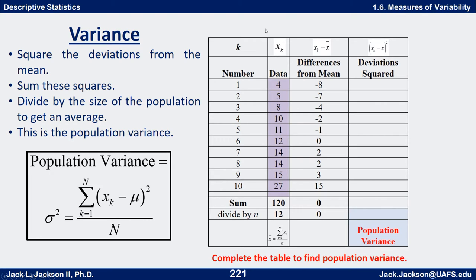Let's return to the dataset from the mean absolute deviation video. The data set in purple is: 4, 5, 8, 10, 11, 12, 14, 14, 15, and 27, listed in increasing order. There are 10 values and their sum is 120, so the mean is 12. We compute deviations: 4 minus 12 is negative 8, 5 minus 12 is negative 7, 12 minus 12 is 0, 15 minus 12 is 3, and so forth. Note that if you add all the deviations they always sum to zero, so this doesn't work as a measure of variability on its own.